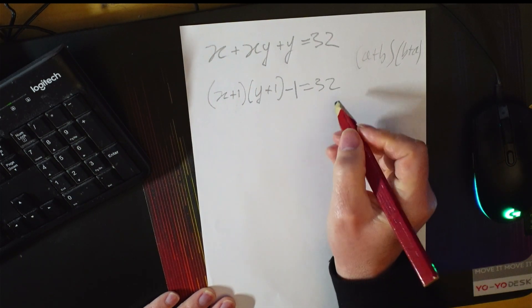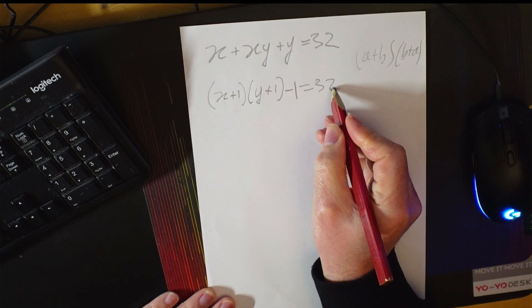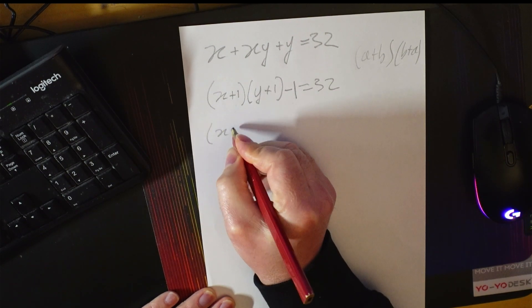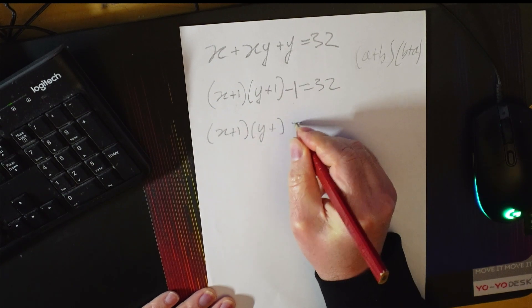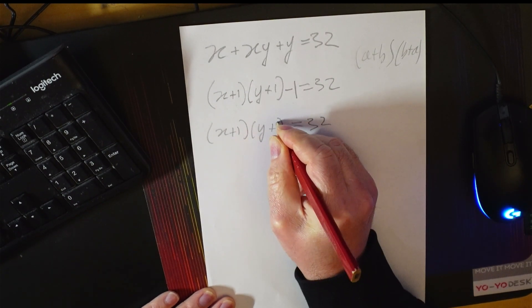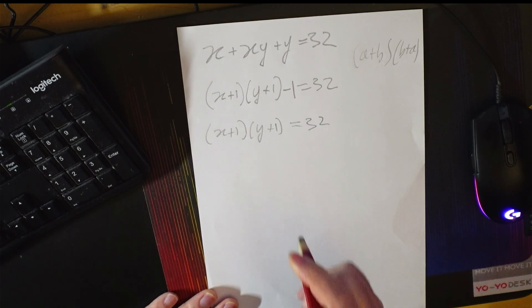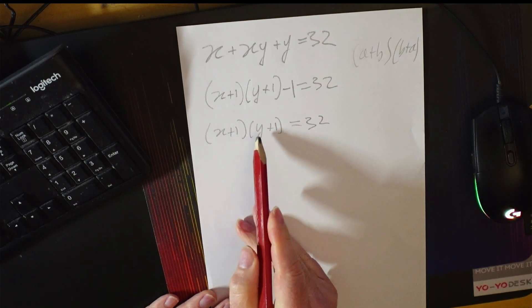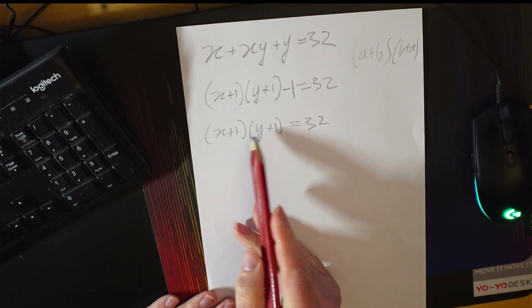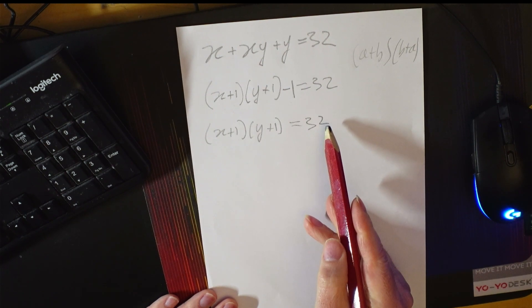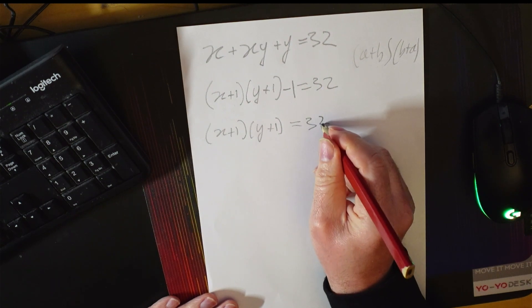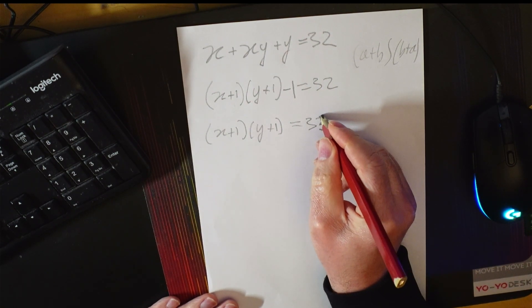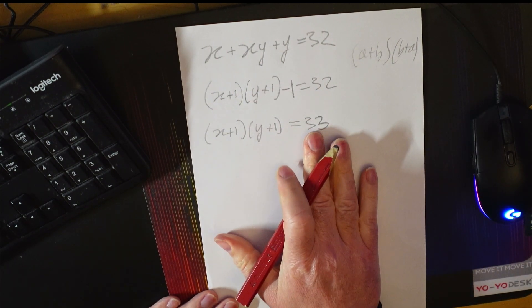So then the next step is we can move that minus 1 over here. So we can say x plus 1, y plus 1 is equal 32. And now we have the product of two values that equals 32 and we know we need integers. So, sorry 33 I beg your pardon, because I had to move that over, equal 33.